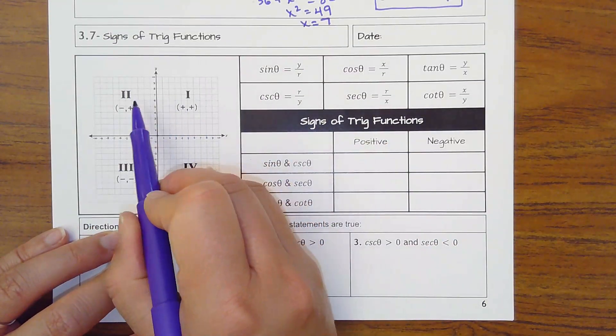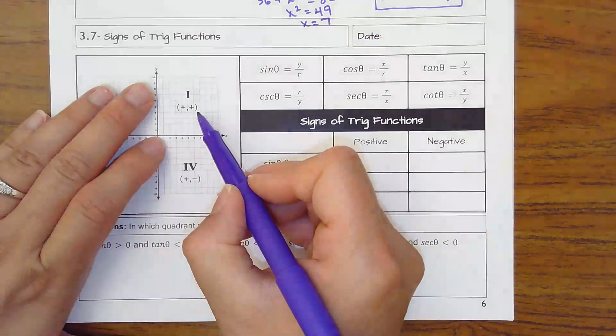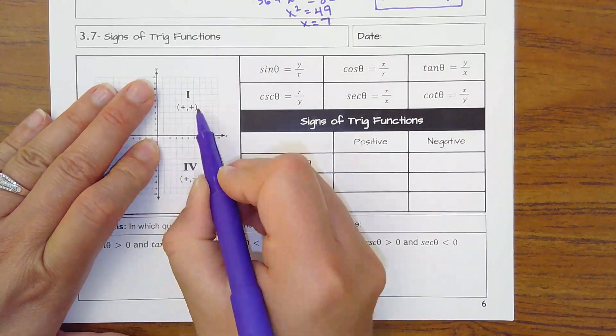So knowing this is quadrant 1, 2, 3, 4, everything's positive in quadrant 1 because x goes to the right, y goes up.